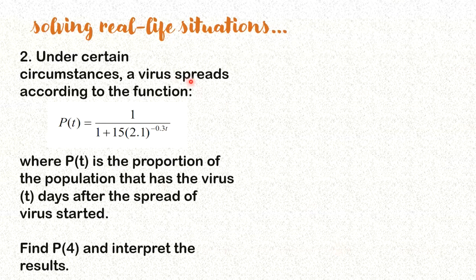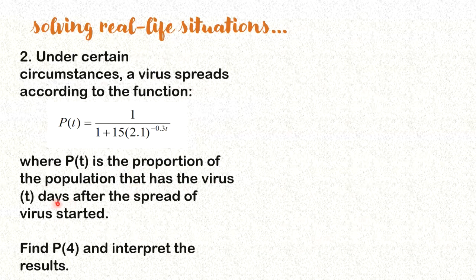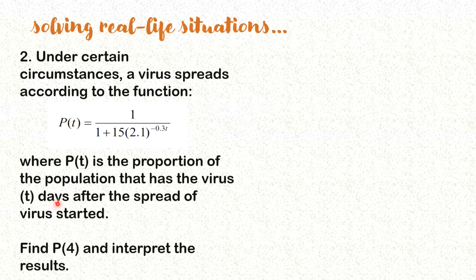Let's have this second example. A virus spreads according to the function P(t). What is P(t)? P(t) is the proportion of the population that has the virus t days after the spread of virus started. And then here, we are going to find P(4) and interpret the result.